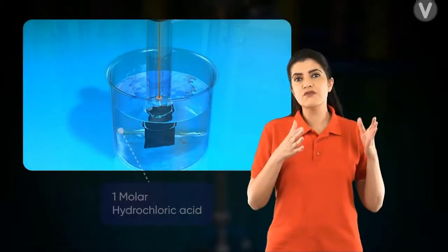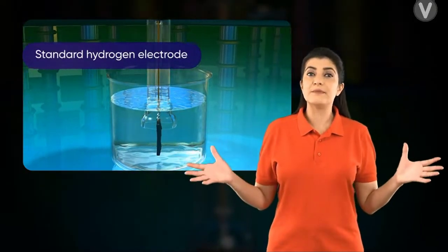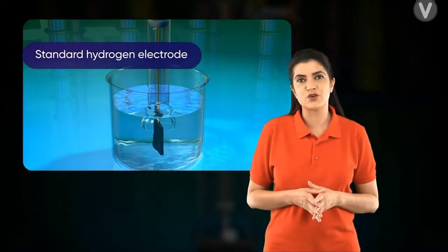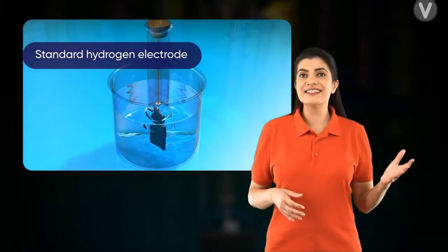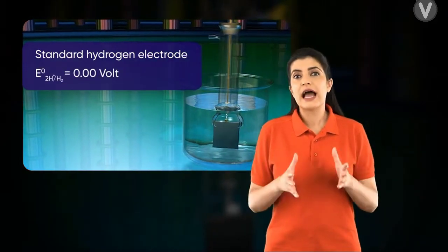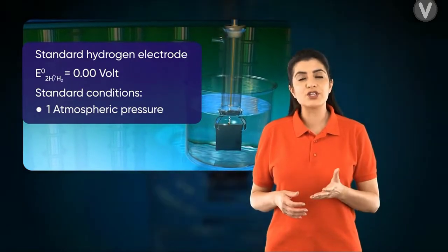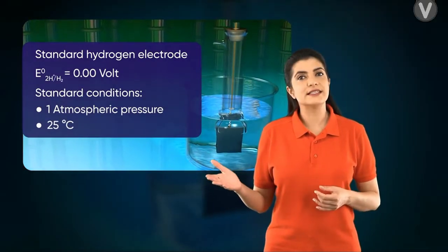This outer jacket consists of an inlet for hydrogen gas. It is dipped in a solution of 1M hydrochloric acid. This completes the assembly of a standard hydrogen electrode. The standard hydrogen electrode potential is considered to be zero volts at standard conditions: 1 atmospheric pressure, 25 degrees Celsius temperature, and 1M HCl solution.